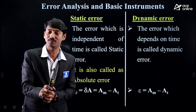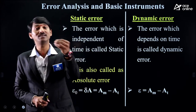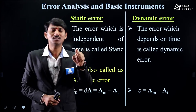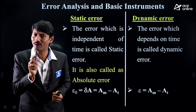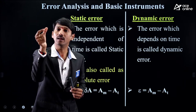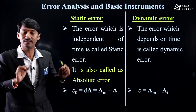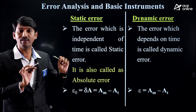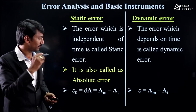Static error is also called limiting error — it is simply constant error. Now, if static error is present, how do we correct it? We need static error correction, denoted as delta-C.